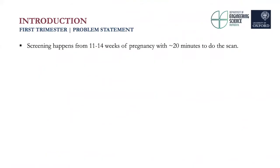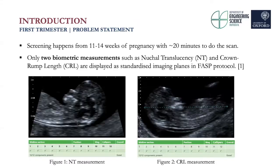First trimester screening happens from 11 to 14 weeks of pregnancy. Sonographers have around 20 minutes to do the scan, which limits the number of structures they go through. In the first trimester, only two biometric measurements — nuchal translucency (NT) and crown-rump length (CRL) — are displayed as standardized imaging planes in the FASP protocol, a fetal anomaly screening program. NT measures the size of the clear tissue behind the baby's neck, while CRL measures the length of the fetus from head to buttocks. These two measurements are the only compulsory image components analyzed and scored using a 12-component table.